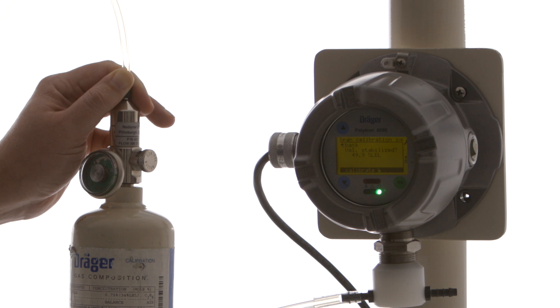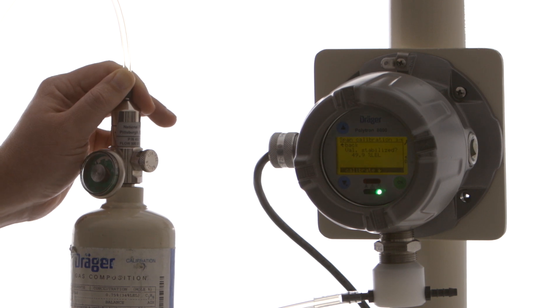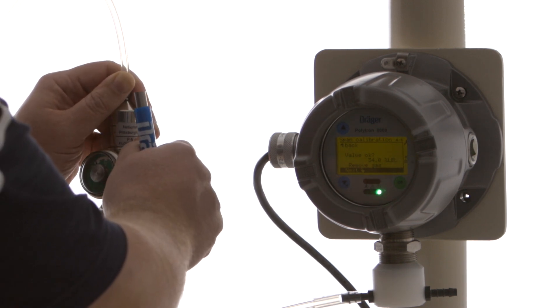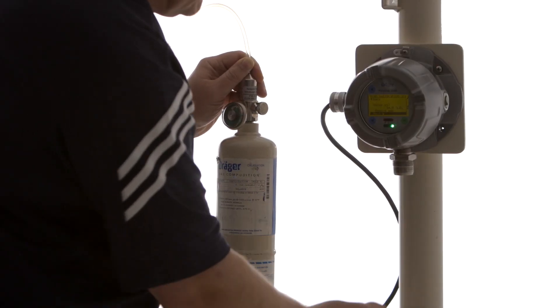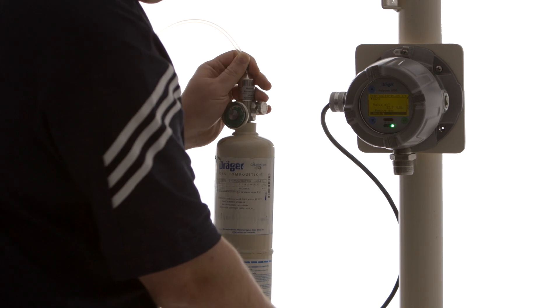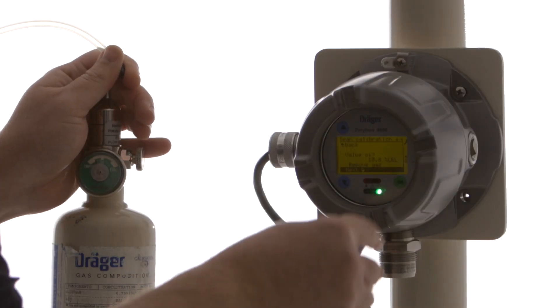Our value stabilized at about 49.9% LEL. So we're going to go ahead and hit calibrate. And this is our new 34% LEL value. So now it's asking us to remove the gas. So we'll turn off our regulator. We're going to remove our calibration adapter. And we're going to say next.